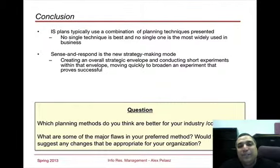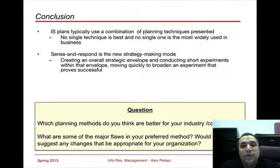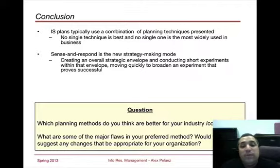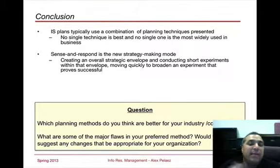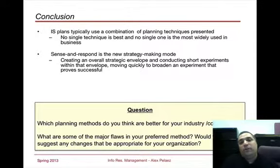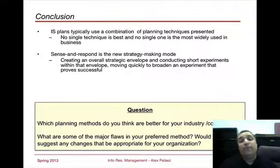IS typically does use a combination of the planning techniques. Sense-and-respond is the strategy-making mode. Which planning methods do you think are better for your company? What are some of the major flaws in your preferred method, and how would you suggest any changes? I'd ask you to go on the blackboard and think about the different planning methods and how they might work in your industry or company, what are some of the flaws in your method, when would it work, when would it not work, and would you suggest any changes that might be appropriate for your company?